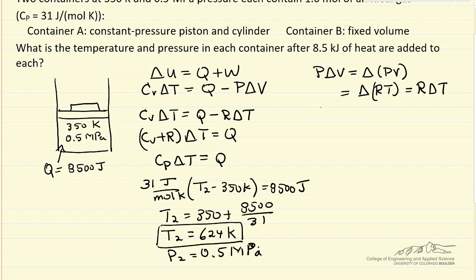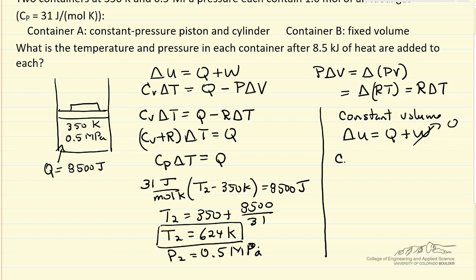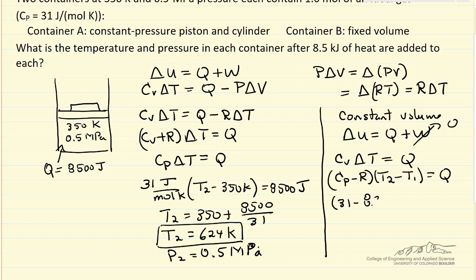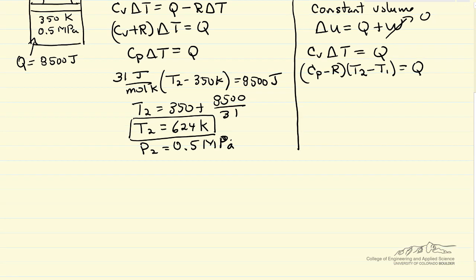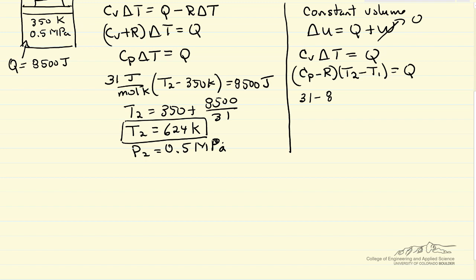Now let's do the same calculation for the constant volume system. Constant volume means there's no work, so delta U equals Q plus W, and W is zero. Delta U is the same as before: Cv·ΔT, and Cv equals Cp minus R. Cp is 31 joules per mole Kelvin, R is 8.314 joules per mole Kelvin. So (Cp − R)·(T2 − T1) equals Q, which is 8500 joules. Substituting in: T2 minus 350 equals 8500 joules.